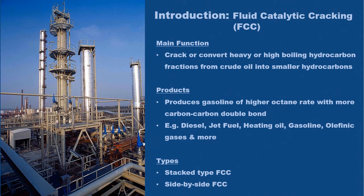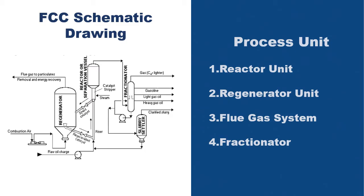There are mainly two types of FCC configuration: the first is a stacked type FCC and the second is a side-by-side FCC. There are many process units in an FCC. In this video, we will be discussing mainly five process units, which are the reactor unit, regenerator unit, flue gas system, and fractionator.